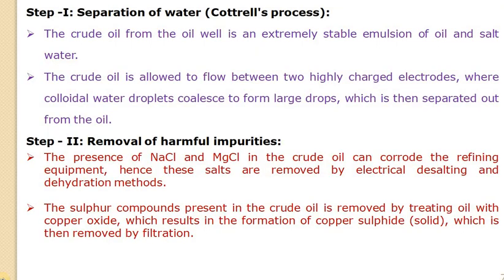The separation of water uses Cottrell's process, where crude oil along with brine water is passed between two highly charged electrodes. The function of these electrodes is to attract water particles and cause them to coalesce — that is, to combine and form larger water droplets — which are then separated from the oil.